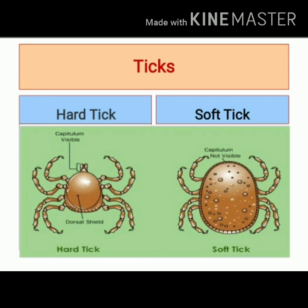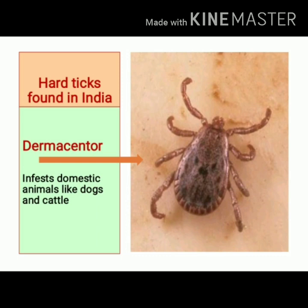Can we differentiate between hard ticks and soft ticks? Yes. Hard ticks on their dorsal surface have a chitinous shield, which is known as the scutum. The scutum is present on the dorsal surface in hard ticks, whereas it is absent in soft ticks.